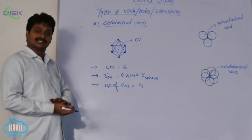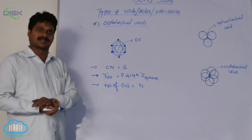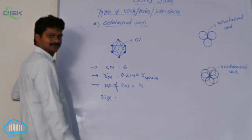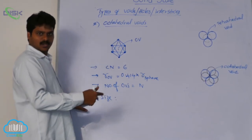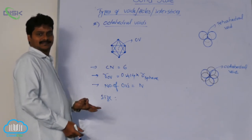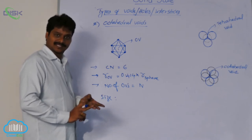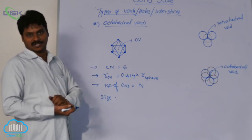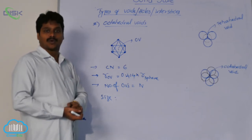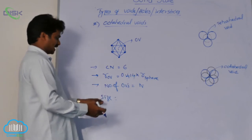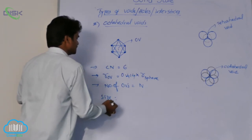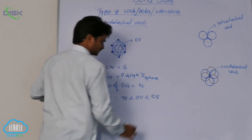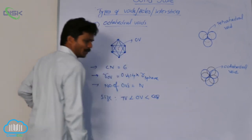Comparing the sizes of voids: in 3-dimensional close-packed structures, we have 3 types — tetrahedral void, octahedral void, and cubical void. The cubical void is obtained only in simple cubic geometry. In order of size: the smallest is the tetrahedral void, next is the octahedral void, and the largest is the cubical void. The cubical void is possible only in a simple cubic system.